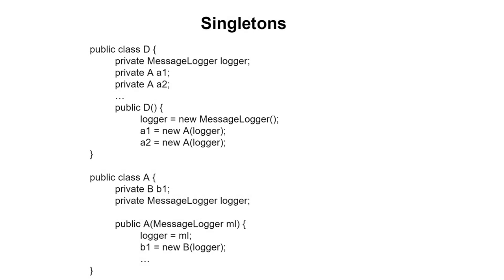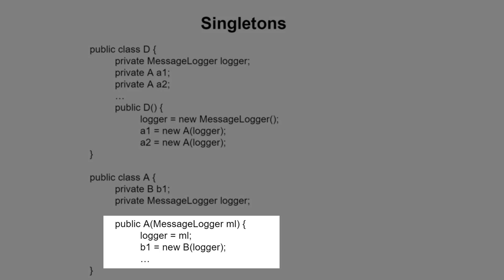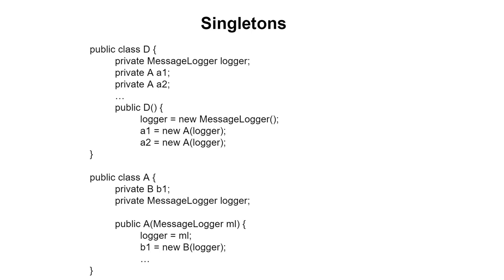Likewise, inside the A class constructor we could take the logger handle that's been given to us and not only save it but also pass it along to any objects that we contain. For example, here you can see that the logger's handle is being passed on to the B objects.